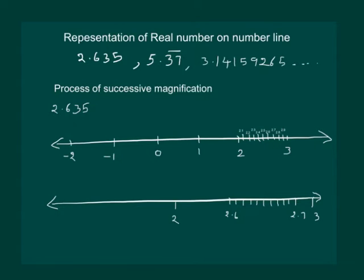On magnification, we get this following figure. 2.6 and 2.7 is further divided into 10 equal parts. And now the first division represents 2.61 and so on.